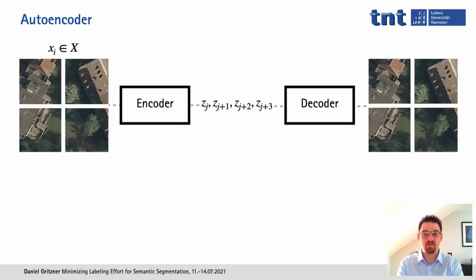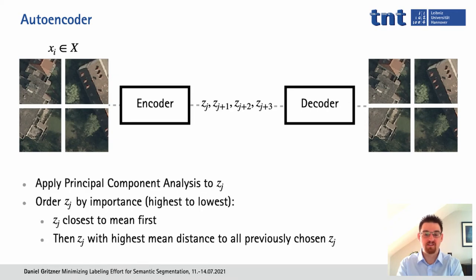Thus, we subdivided our input images into smaller patches and then applied the autoencoder on the smaller patches. That means for each input xi we actually have several zj's. In this example, by subdividing the input into two-by-two patches, we get four different zj's. In order to identify which xi we actually want to use, we first applied principal component analysis to the latent vectors zj, to reduce the dimensionality. We only kept those dimensions that captured 95% of the variance, because we later want to compute distances and wanted to avoid the curse of dimensionality.